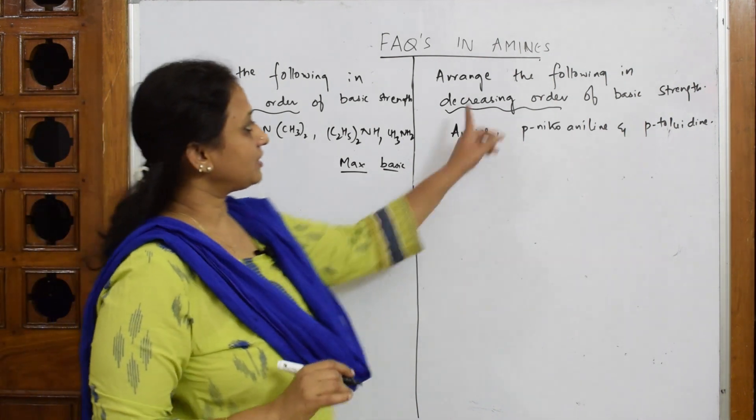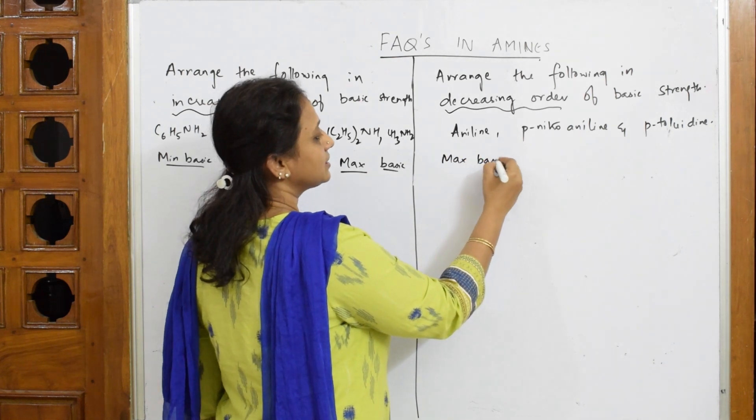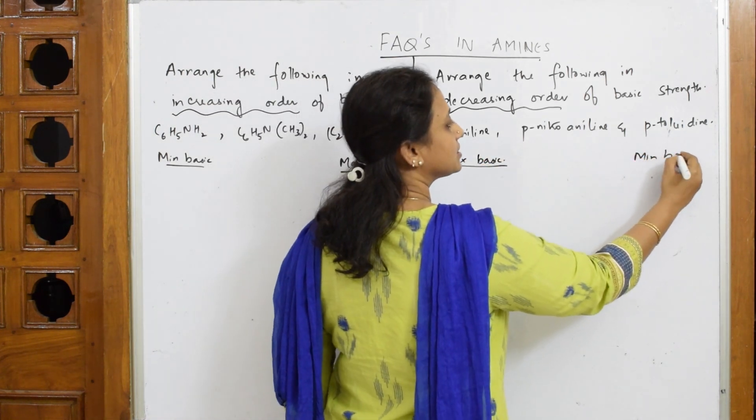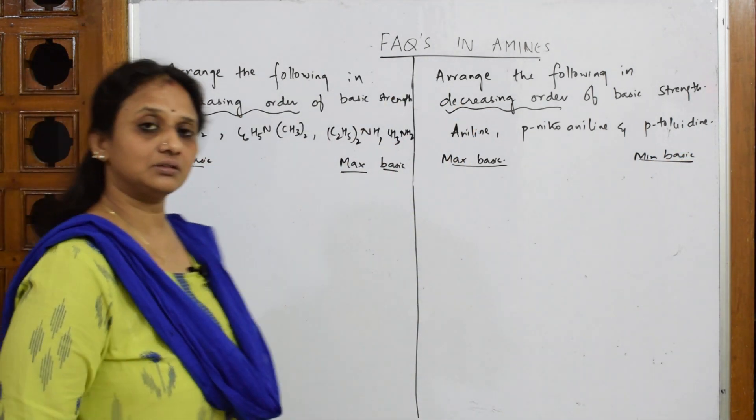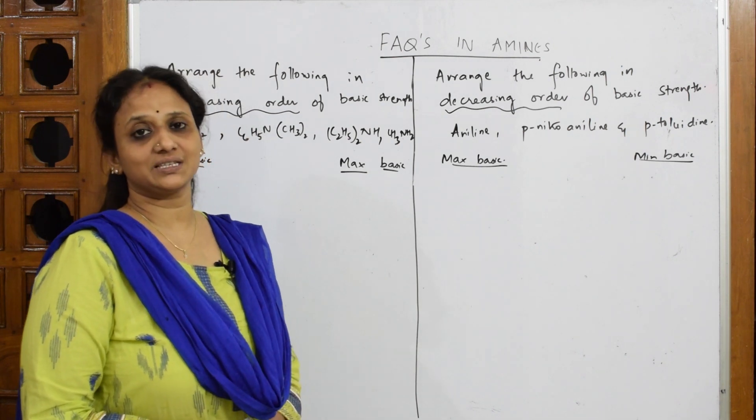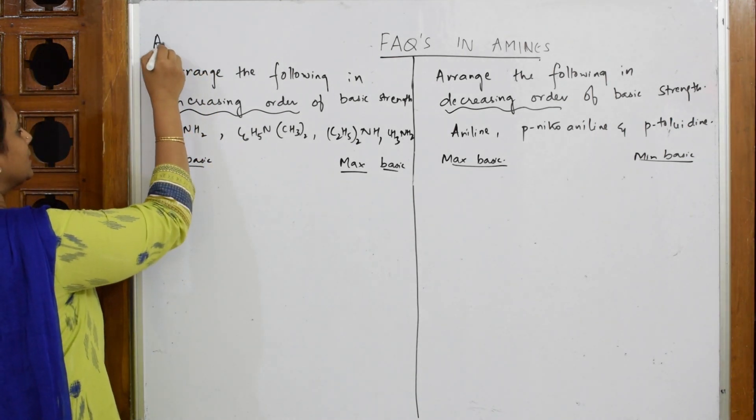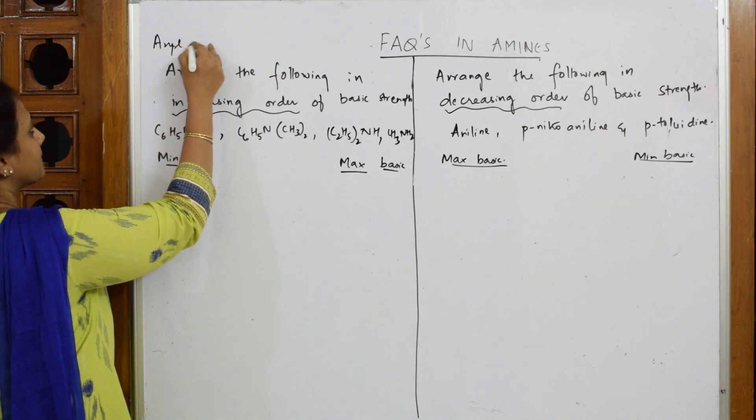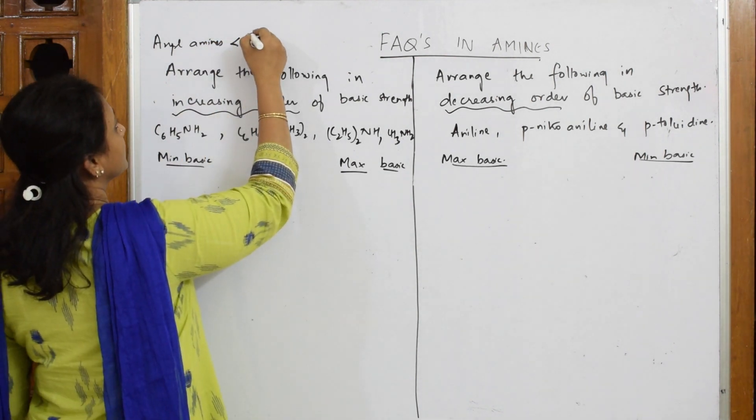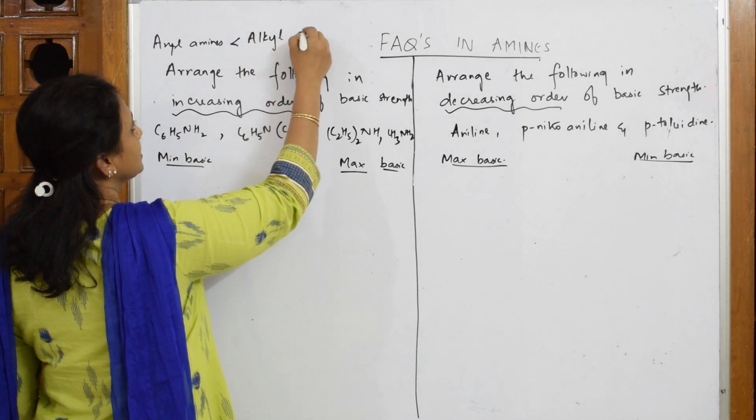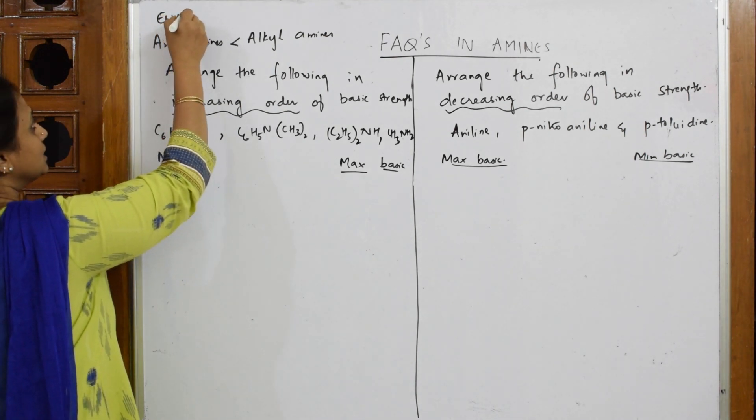Arrange the following in decreasing order: the first should be maximum basic and the last should be minimum basic. Remember this. Now, whenever you have to answer a question about basic strength, what should you remember? Important thing: always the order would be aryl amines are less basic than alkyl amines. And more importantly, if you have an electron withdrawing group as I've given